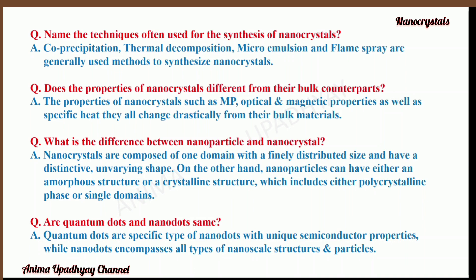Do the properties of nanocrystals differ from their bulk counterparts? Yes, they are different. Properties such as melting point, optical and magnetic properties, as well as specific heat, all change drastically from their bulk counterparts. The difference between nanoparticles and nanocrystals is that nanocrystals are composed of one domain with a finely distributed size and have a distinctive, uniform shape, whereas nanoparticles can have either an amorphous structure or a crystalline structure, including polycrystalline phases or single domains.